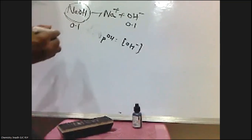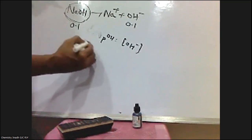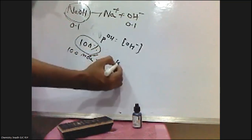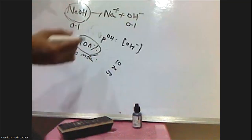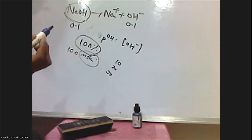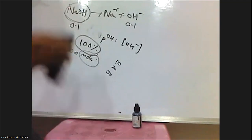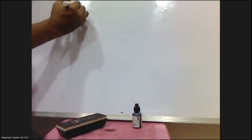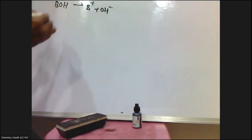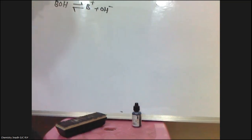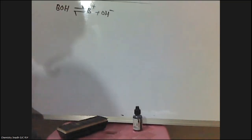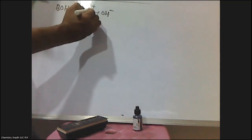Whereas if you take weak bases, their dissociation is not 100%. For example, if you take 100 molecules of a weak base, only 10, 20, or 30 molecules may dissociate — it depends upon the base. If you take a weak base such as BOH, it dissociates into B⁺ and OH⁻, but there exists an equilibrium between the dissociated form and the undissociated form.